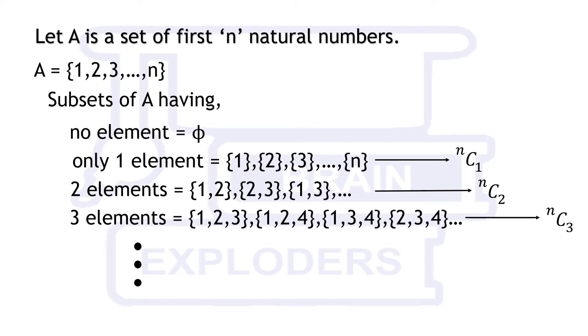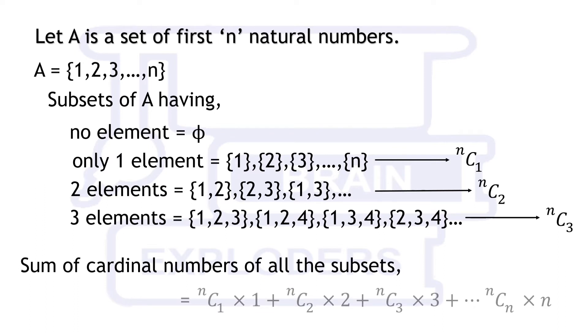This is true for other subsets also. Therefore, sum of cardinal numbers of all the subsets is equal to nc1 times 1 plus nc2 times 2 plus nc3 times 3 and so on.